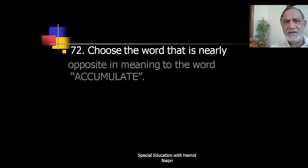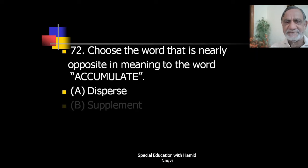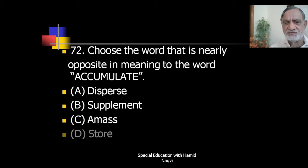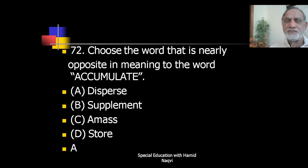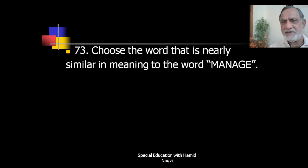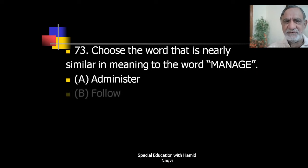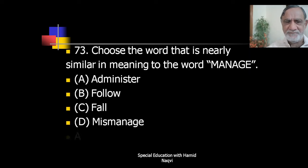Word opposite of 'accumulate' is 'disperse.' Now synonyms questions: choose the word nearly similar in meaning to 'manage' — the correct synonym is A — 'administer.' Next, convert 'Her baby has been crying since midnight' into interrogative. The correct interrogative form is C — 'Has her baby been crying since midnight?'